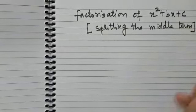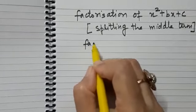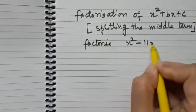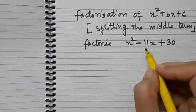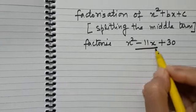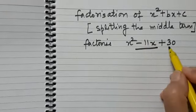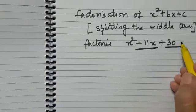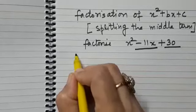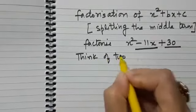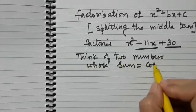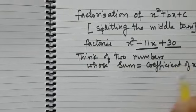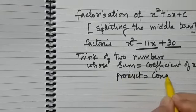Let us understand this using an example. We need to factorize x² - 11x + 30. The method works as follows: first, we need to find two numbers whose sum is equal to the coefficient of x, and whose product is equal to the constant term.